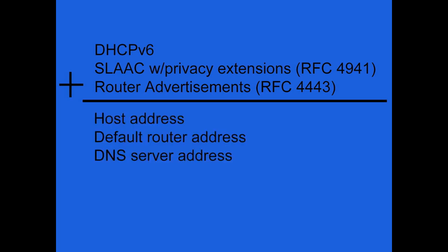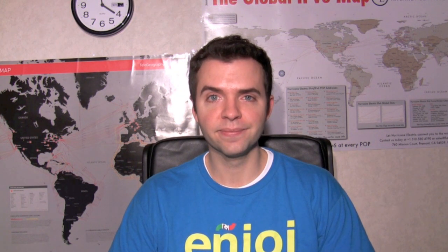A combination of DHCPv6 stateless address auto configuration with privacy extensions and router advertisement protocols will give your host its own address, the address of the default router, and the DNS server, much the same way that DHCPv4 does. There are still a thousand ways to have your privacy compromised online, but using an iPhone over IPv6 is no longer one of them.